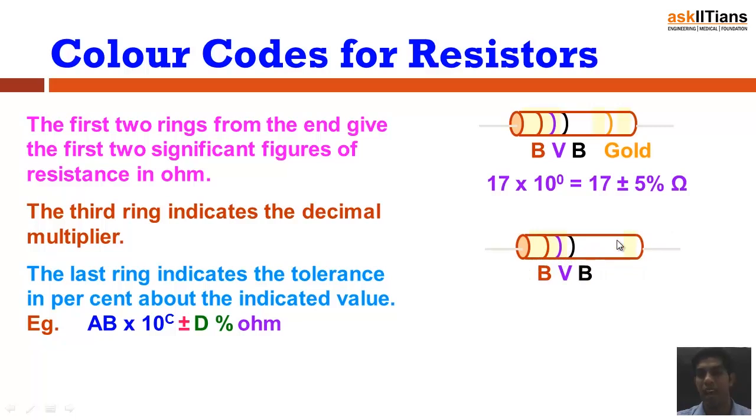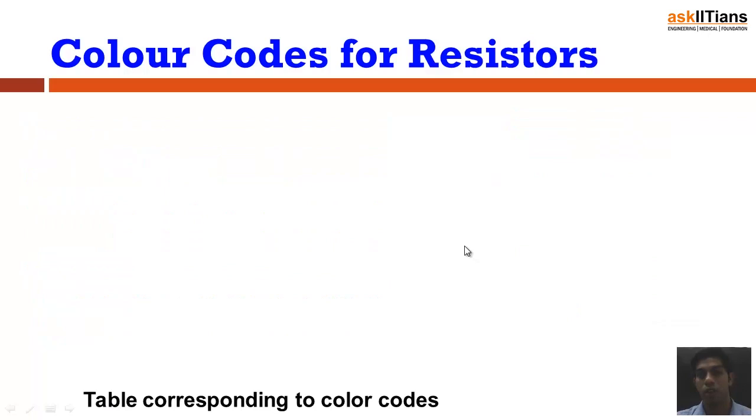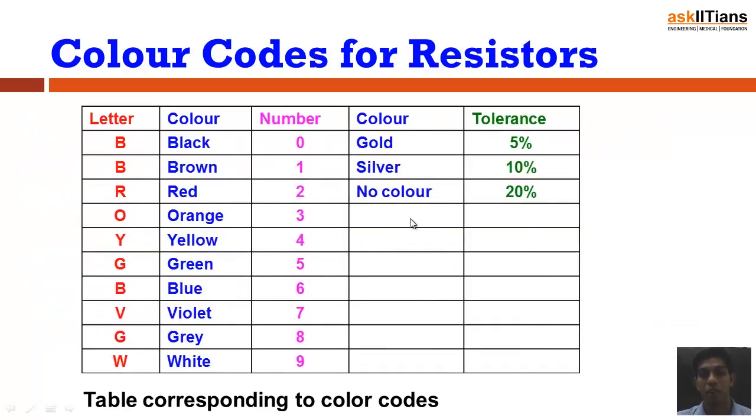Let's take another example corresponding to it. This one is again brown, this is violet, this is black, and I don't see a fourth ring over here. So this actually means this is 52 times 10 to the power 0, so this comes out to be 52 plus 20%. So no color actually specifies 20% of tolerance value.